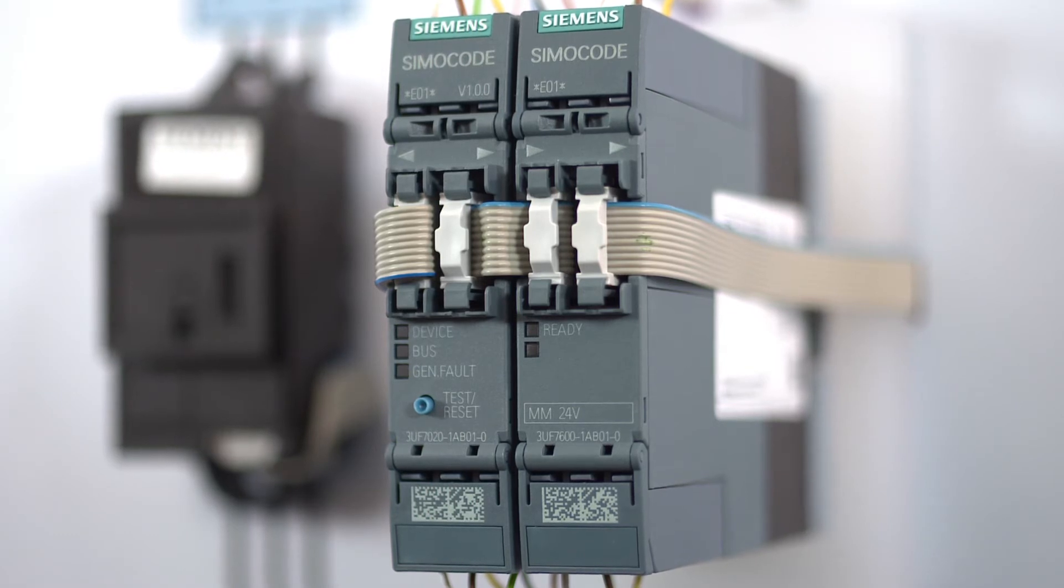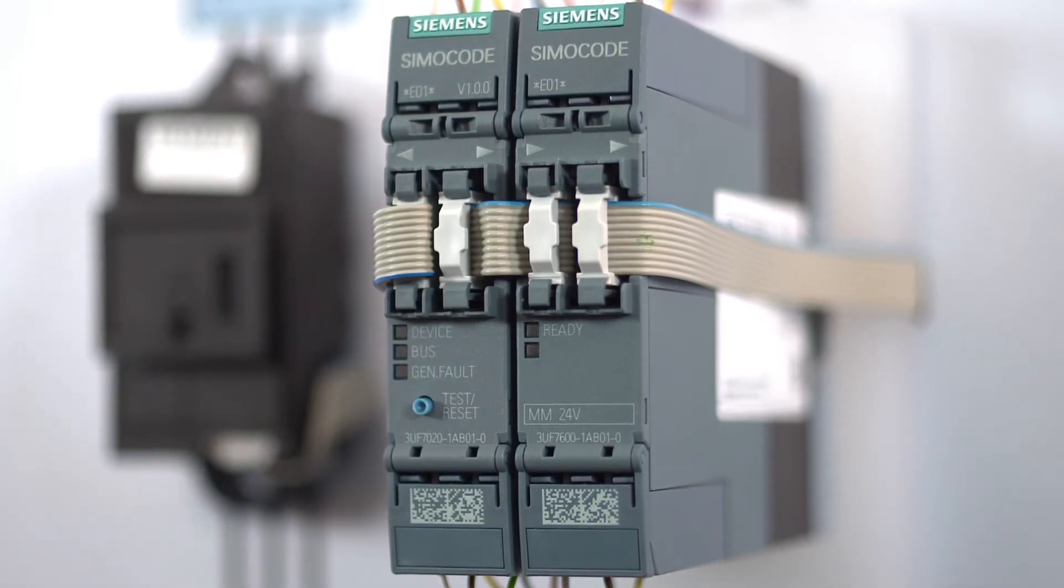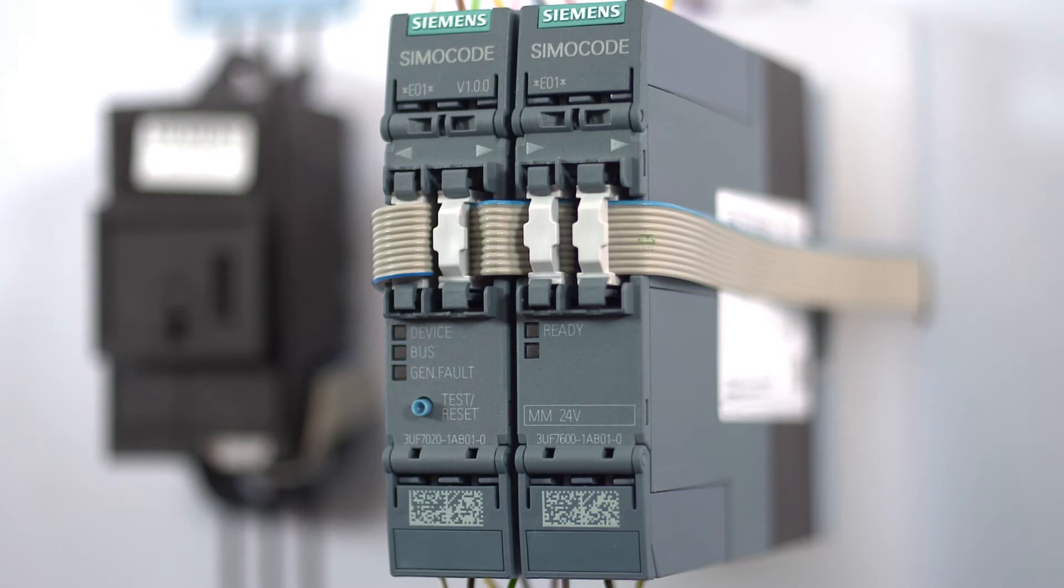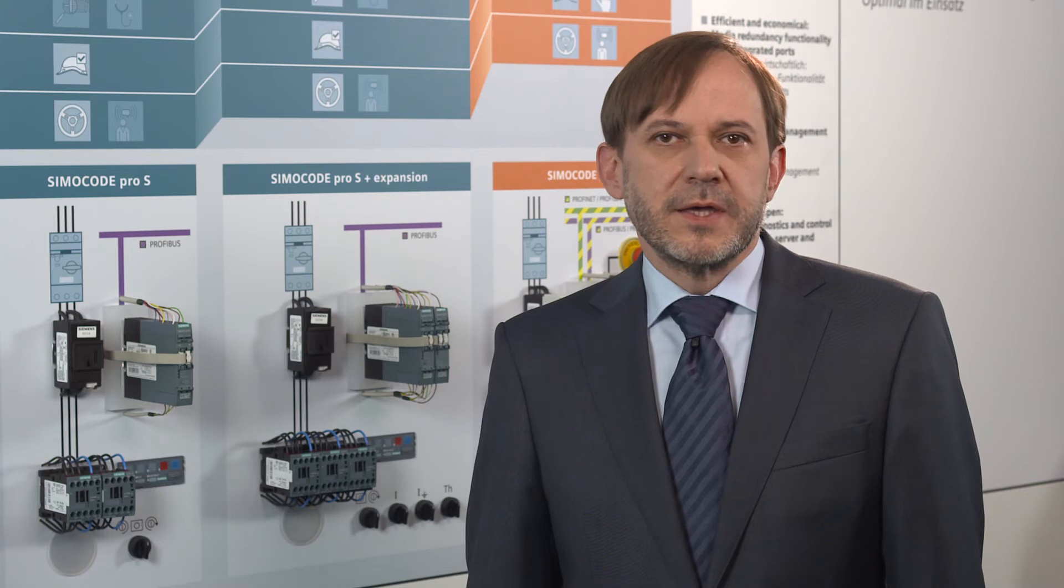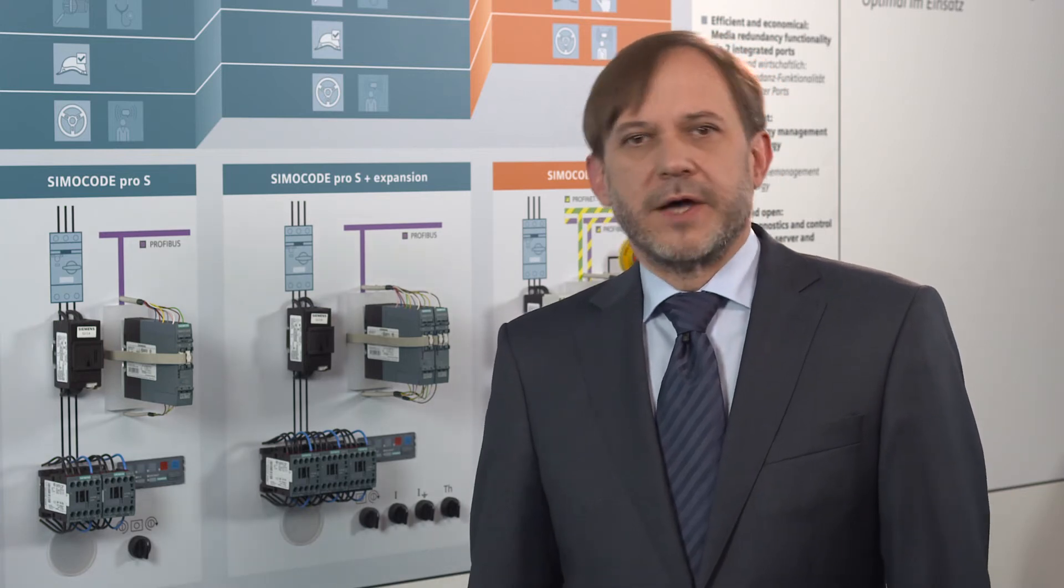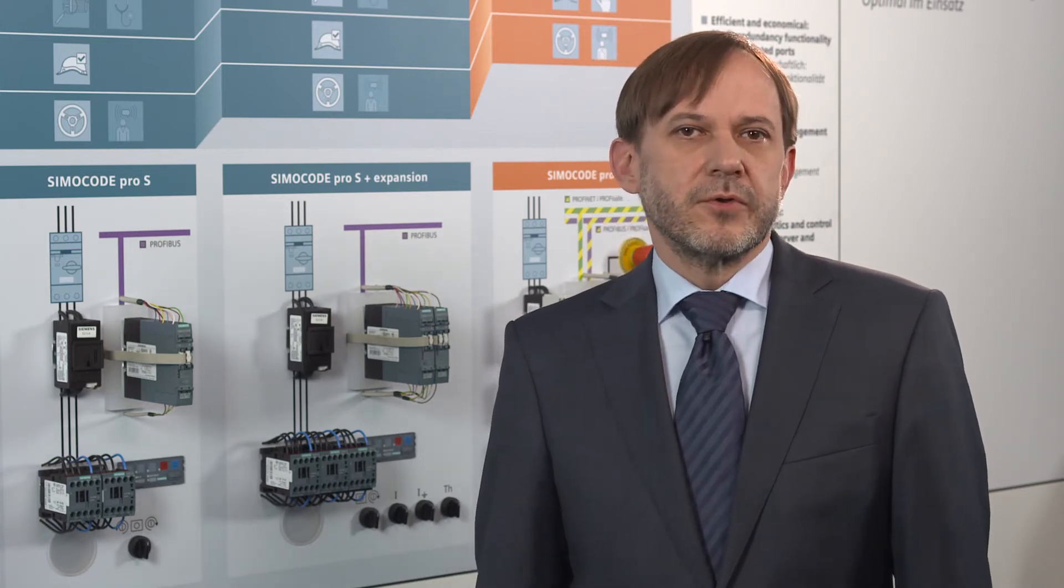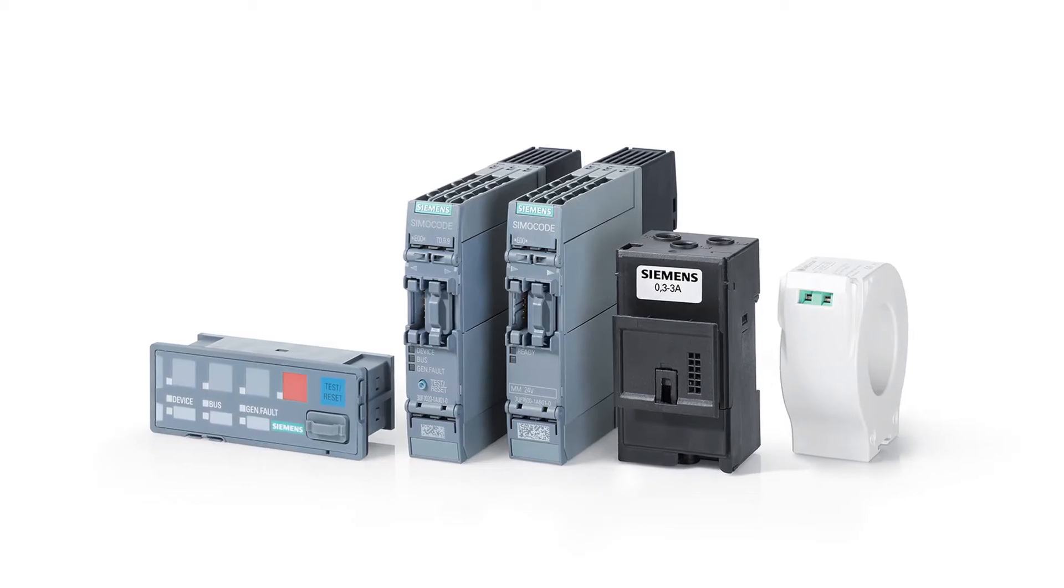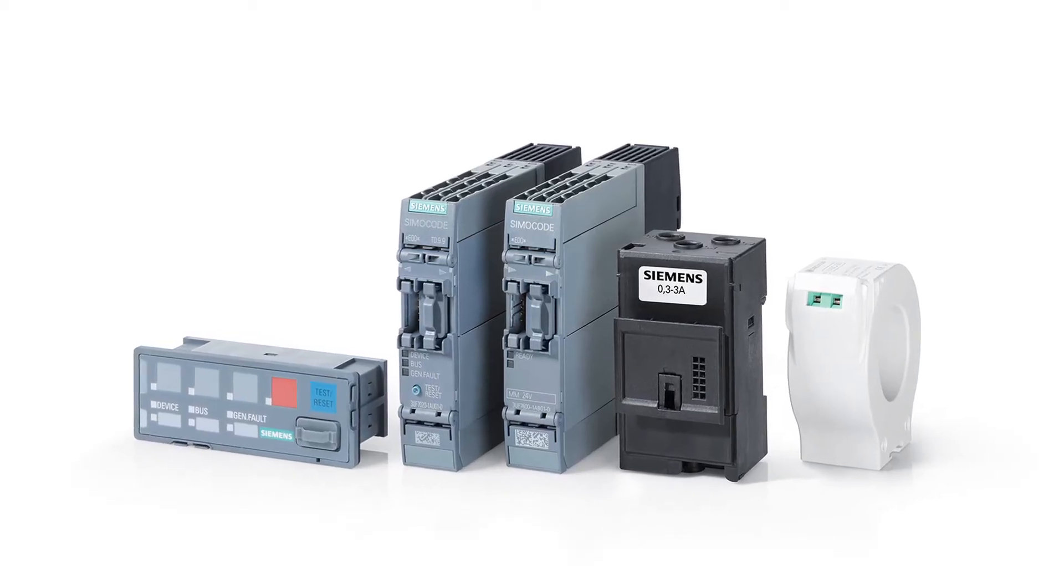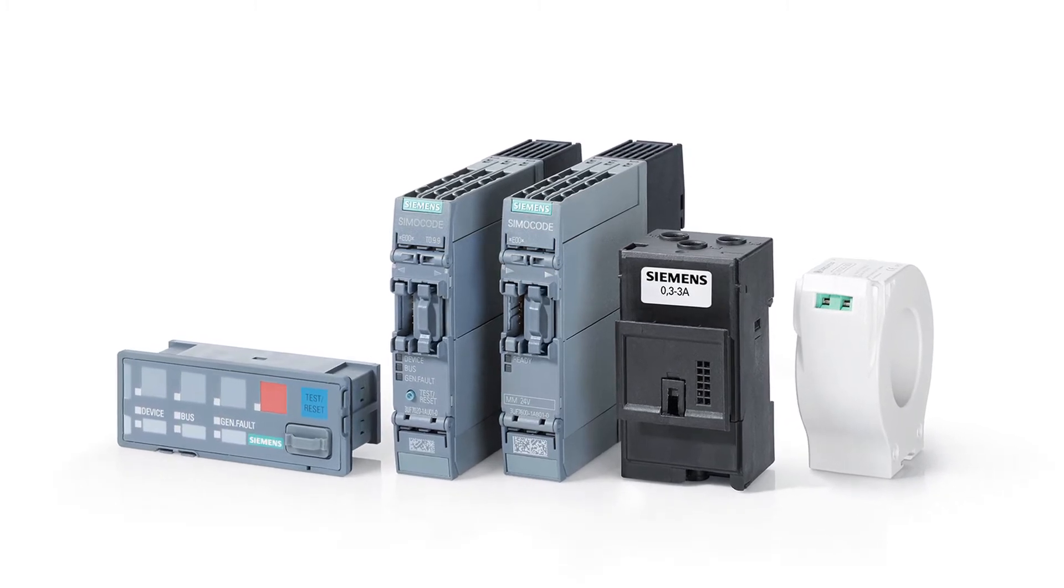The optional multifunction module expands the basic unit with four additional digital inputs with 24V or 110-240V as well as two relay outputs. Other control functions such as soft starting or star delta starting are thus possible. It is also possible to connect a residual current transformer for measuring the earth fault current and a temperature sensor.